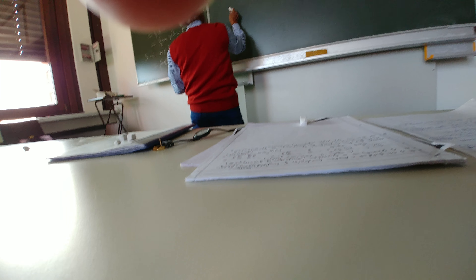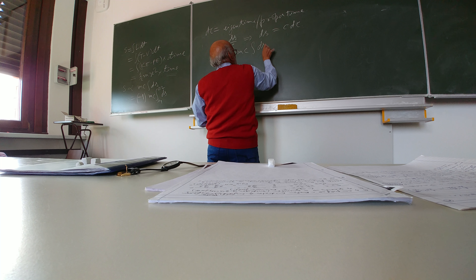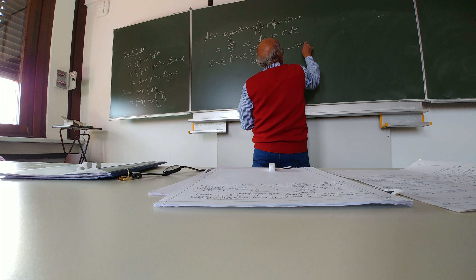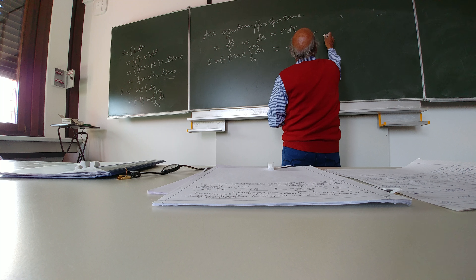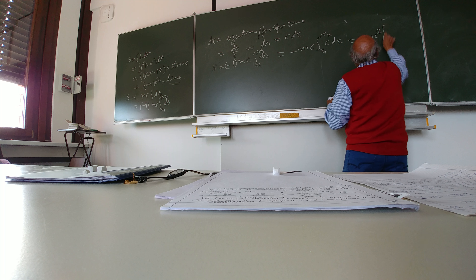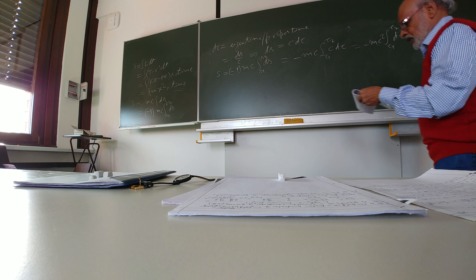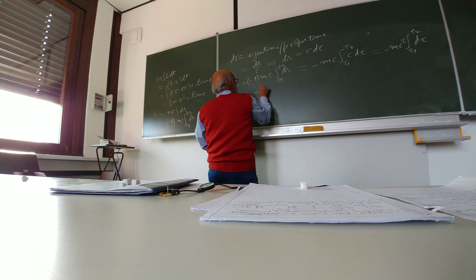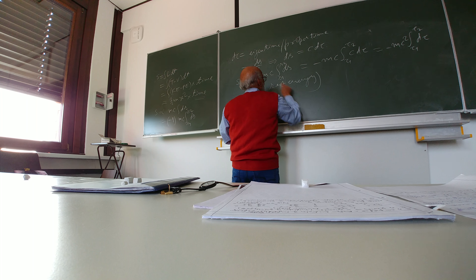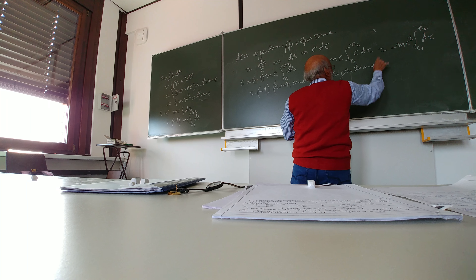This s times mc times integral d s from s1 to s2 — this is minus mc times integral c d tau between tau1 to tau2, and this is equal to minus mc squared from tau1 to tau2. So this is equal to minus 1 times the rest energy mc squared times the eigentime.